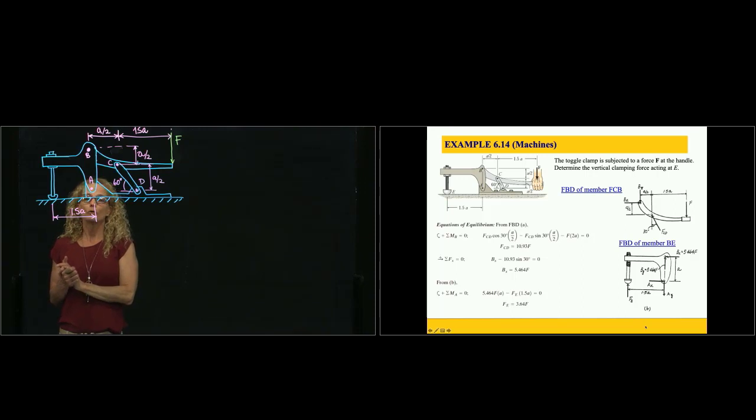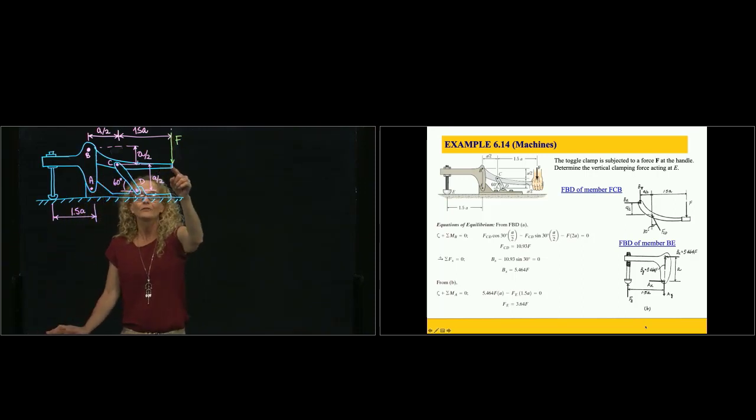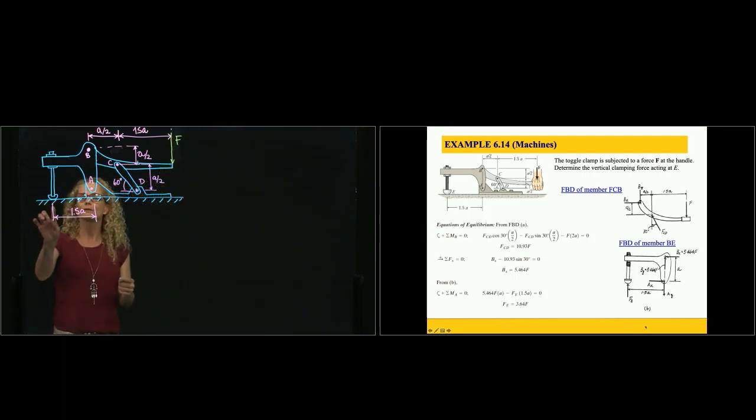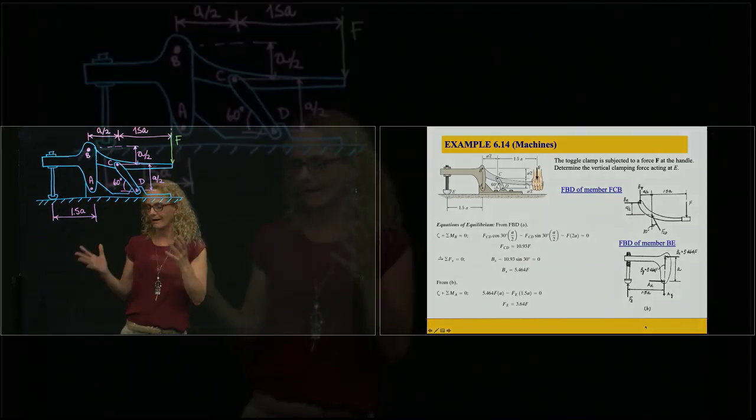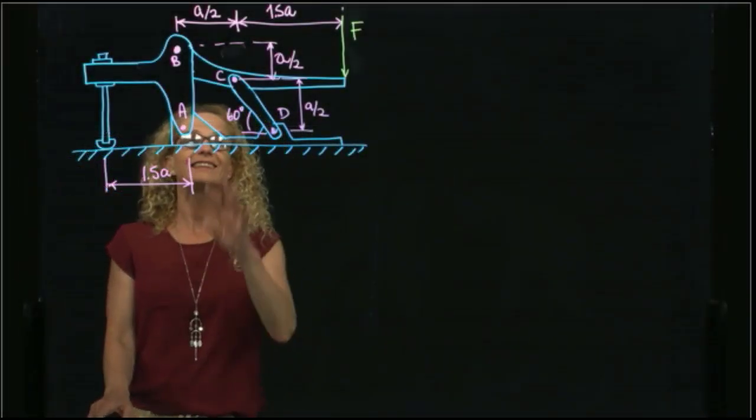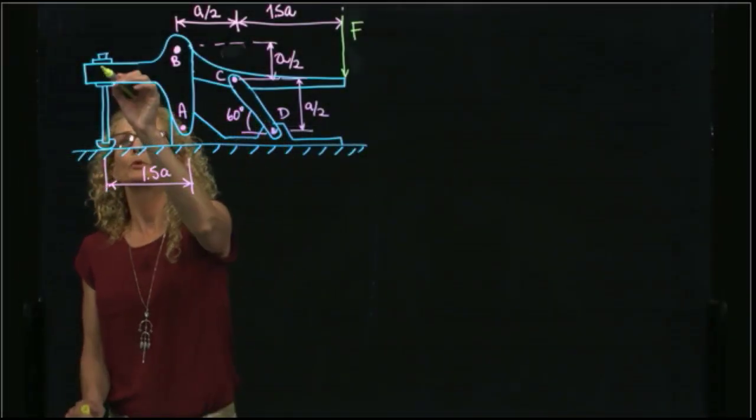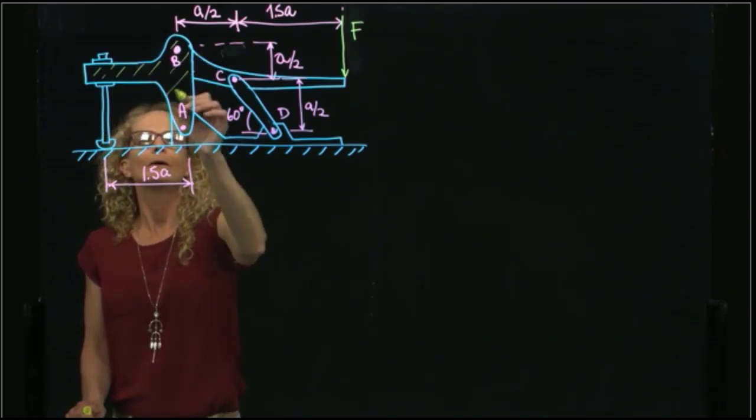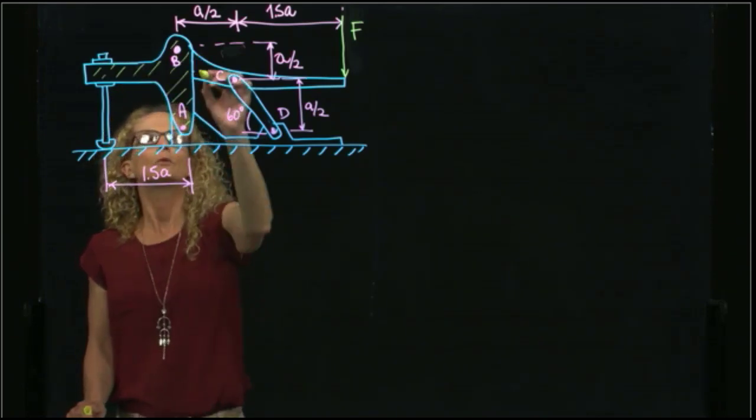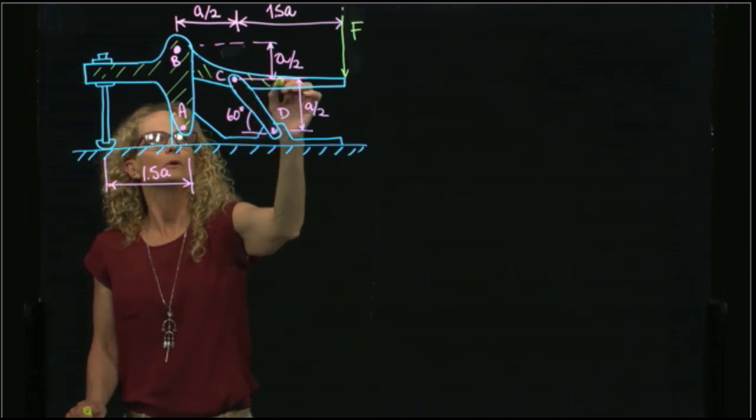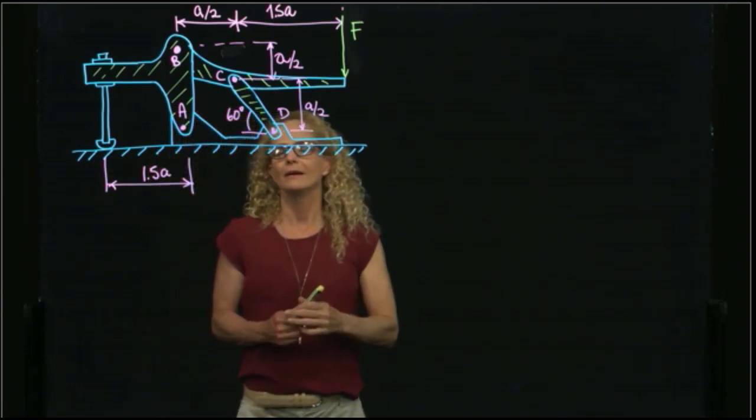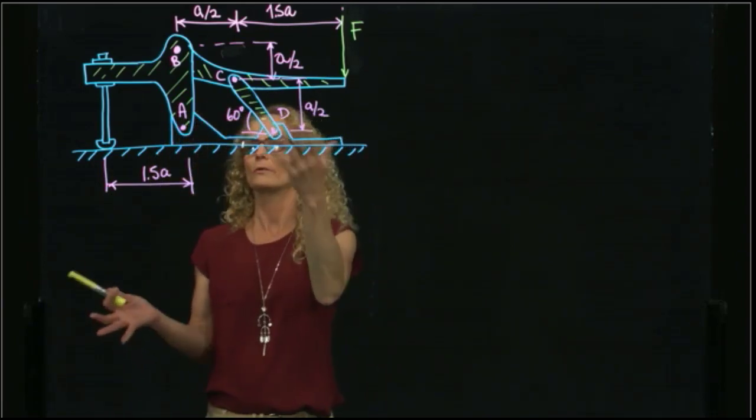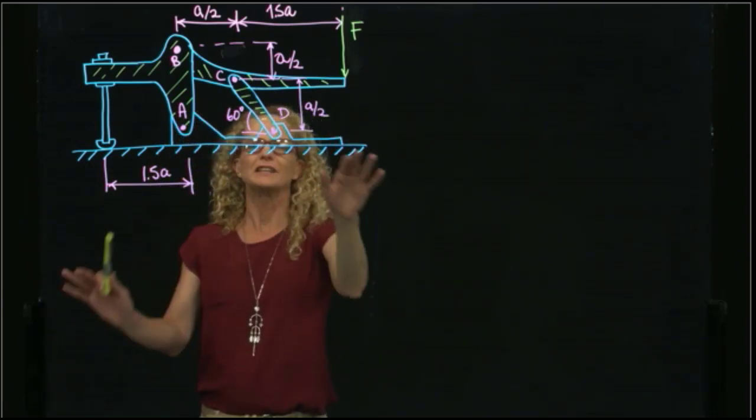We want to know if we apply a force F, how much force do we receive at this end? How many pieces does this device have? This device has three pieces: this will be piece one, this will be the handle, and this will be a weightless link. Everything else is the floor, the machine, the fixed support.